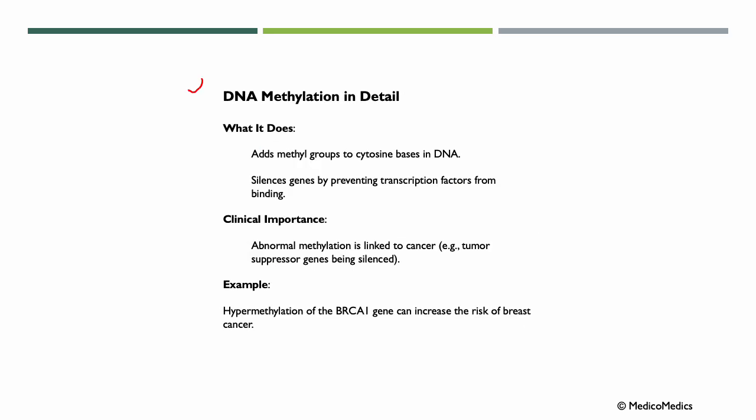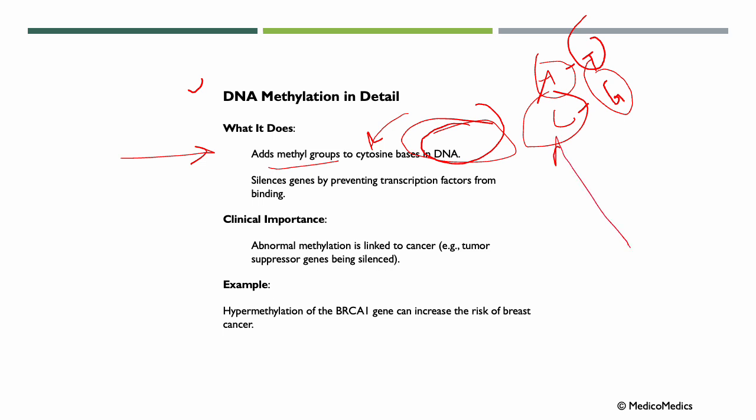Now, DNA methylation. What it does is it adds methyl groups to cytosine based in DNA. Remember the pairings of A to T and C to G in DNA? We had adenine, thymine, cytosine, and guanine. So here we're talking about cytosine. We add methyl groups here and this silences genes by preventing transcription factors from binding.